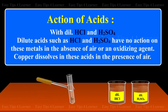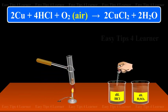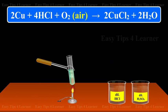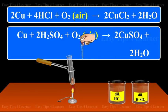Action of acids: With dilute hydrochloric acid and sulfuric acid — dilute acids such as hydrochloric and sulfuric acid have no action on copper in the absence of air or an oxidizing agent. Copper dissolves in these acids in the presence of air. Copper + hydrochloric acid + oxygen/air gives copper chloride + water. Copper + sulfuric acid + oxygen/air gives copper sulfate + water.